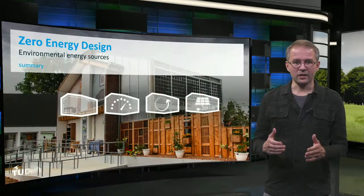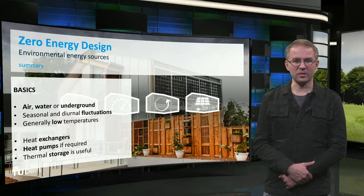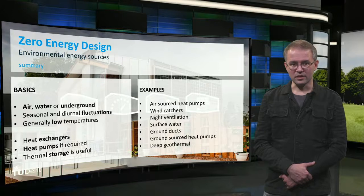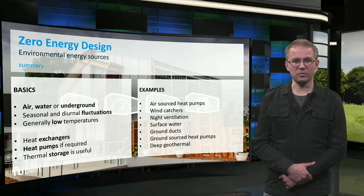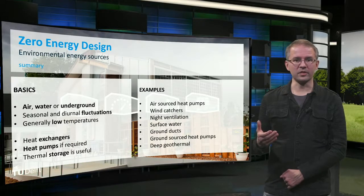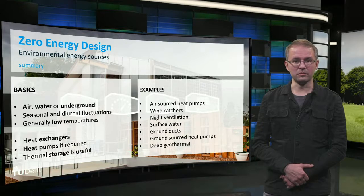To recap: air, surface water, and the ground around and under your building can be used for heating and cooling using heat exchangers. Because source temperatures are low and fluctuate daily and seasonally, they are sometimes paired with a heat pump and thermal storage. In this lecture we have seen air-sourced heat pumps (also known as air conditioning), wind catchers, night ventilation, surface water, ground ducts, ground-sourced heat pumps (both horizontal and vertical), and deep geothermal wells. There are a lot of possibilities, but they all depend on local environmental circumstances. Find projects that use these sources in the same region as your building design to see what you can do. Thank you for your attention.